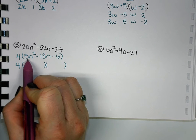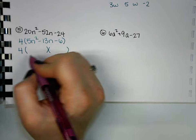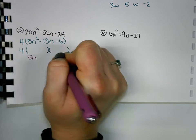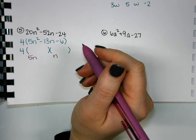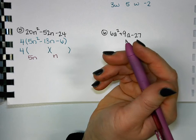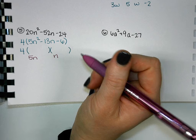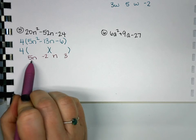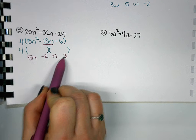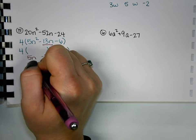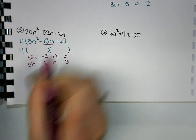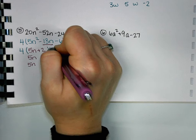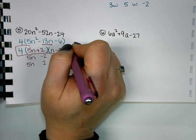So two things that multiply to 5n². 5n and n. Two things that multiply to negative 6. Negative 2 and 3. So again, now our goal is negative 13. So 15 minus 2 gets us our positive, so if we switch the negatives we'll get our negative 15 plus 2 to get our negative 13. So 5n plus 2, n minus 3.